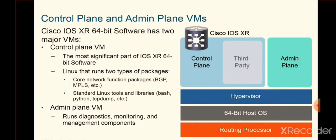Now let's look at what the different containers and VMs are running. We have two major components: the control plane and the admin plane. The control plane is what you're normally experiencing when you work in the CLI — typing show commands, config, or config T. All the major network function packages such as BGP, MPLS, OSPF, and ISIS run in the control plane. As the name implies, the control plane handles how traffic flows across the network, for instance via routing protocols.